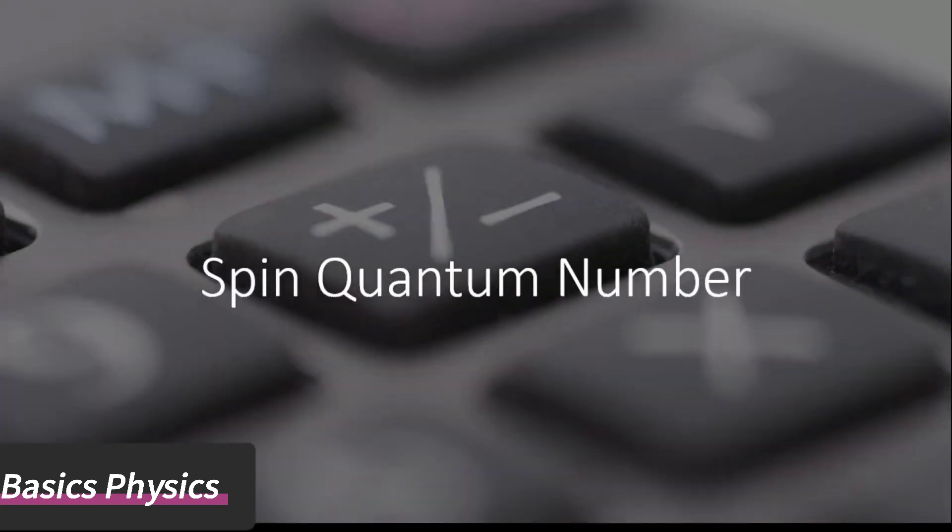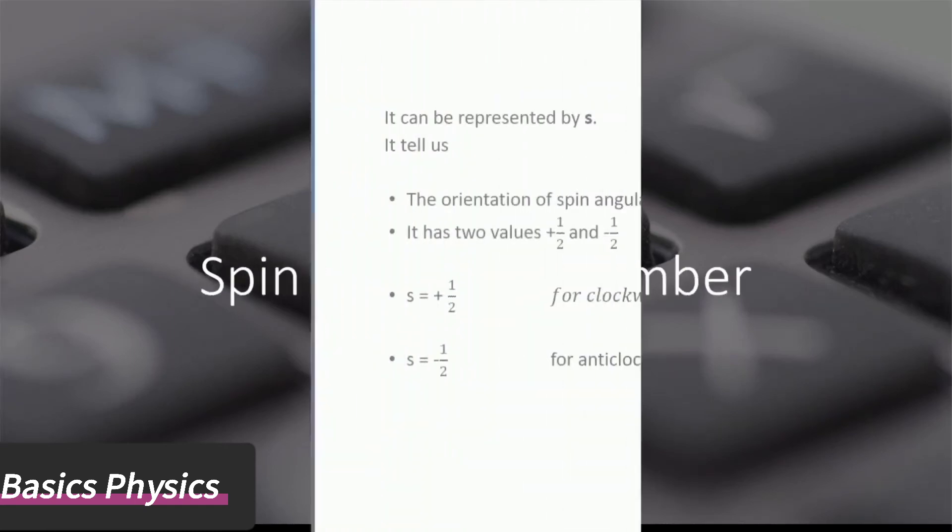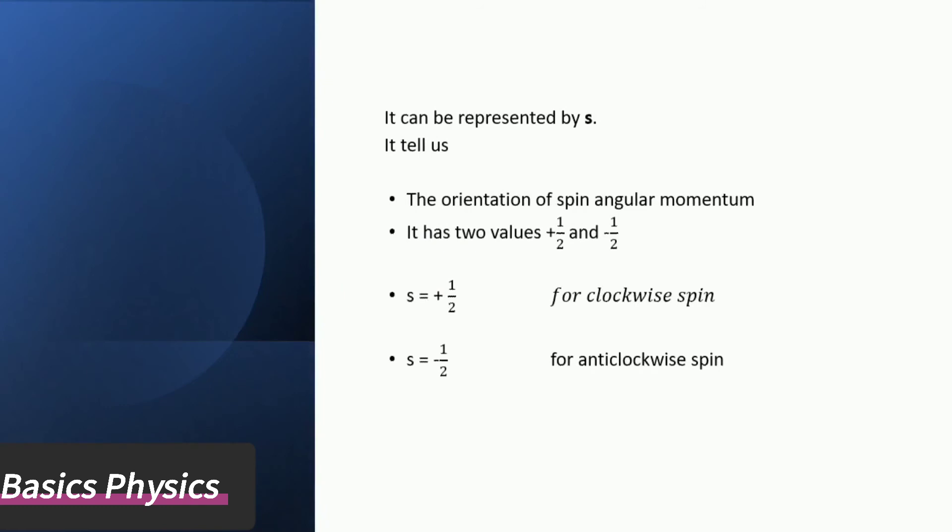Spin quantum number can be represented by s. It tells us the orientation of spin angular momentum. It has two values plus 1 by 2 and minus 1 by 2. S equal to plus 1 by 2 for clockwise direction, and s equal to minus 1 by 2 for anticlockwise direction.